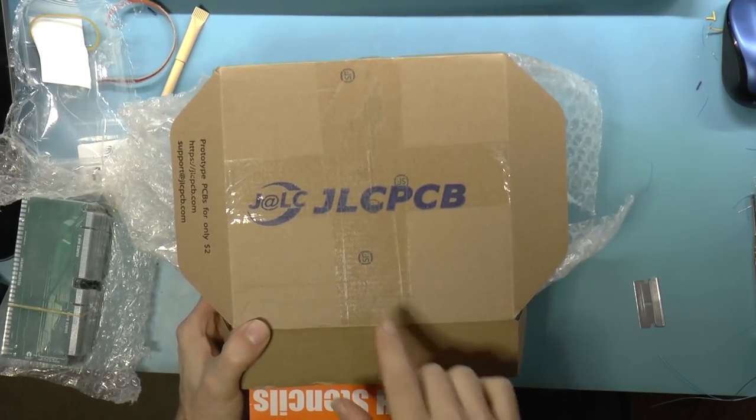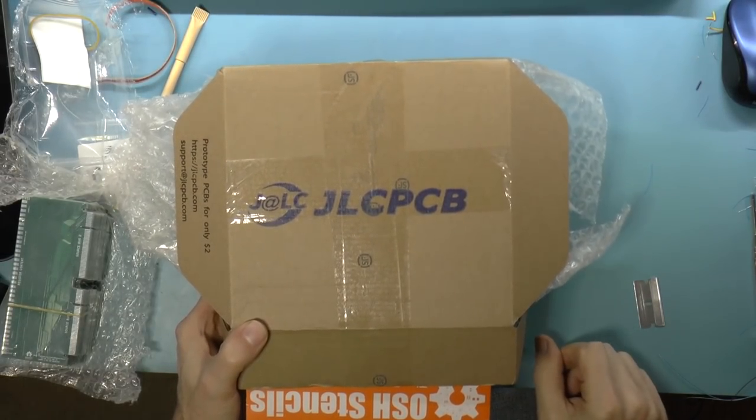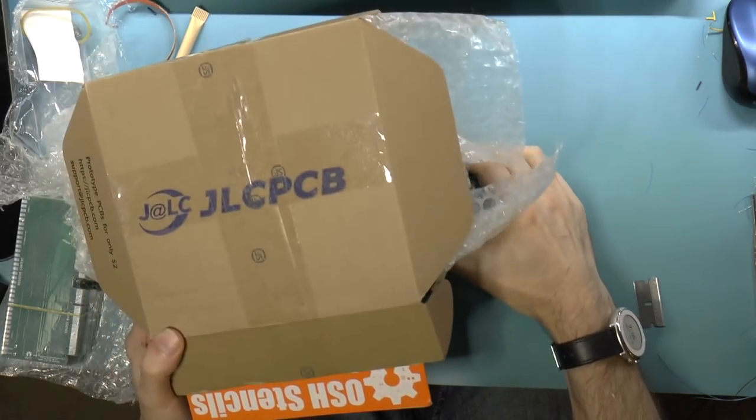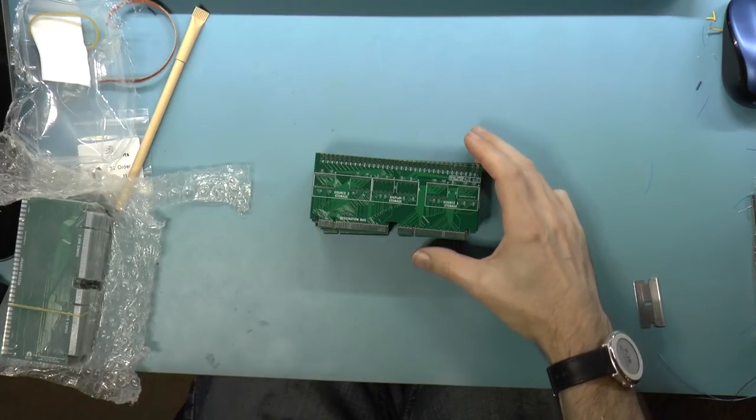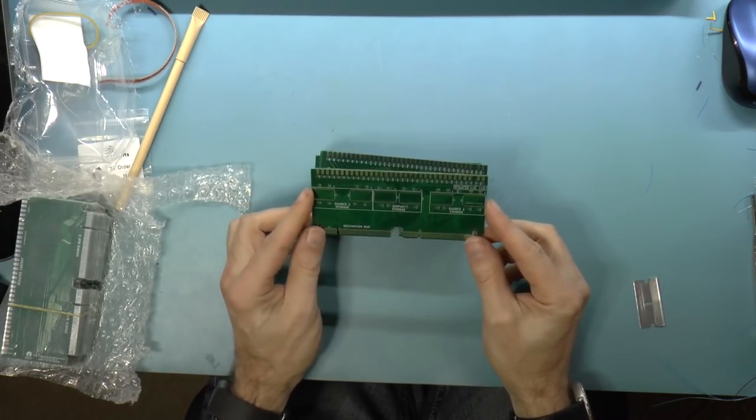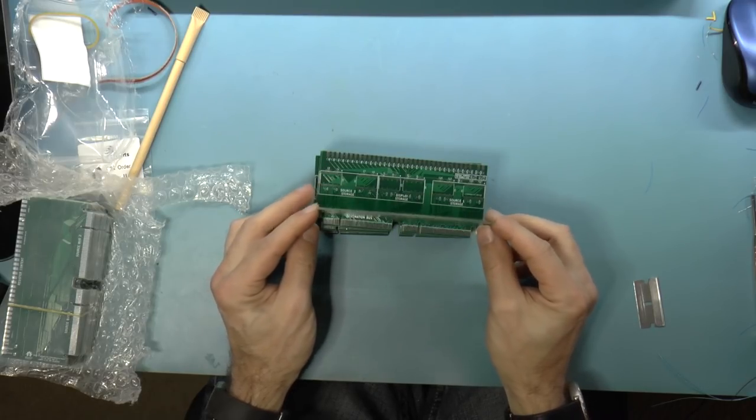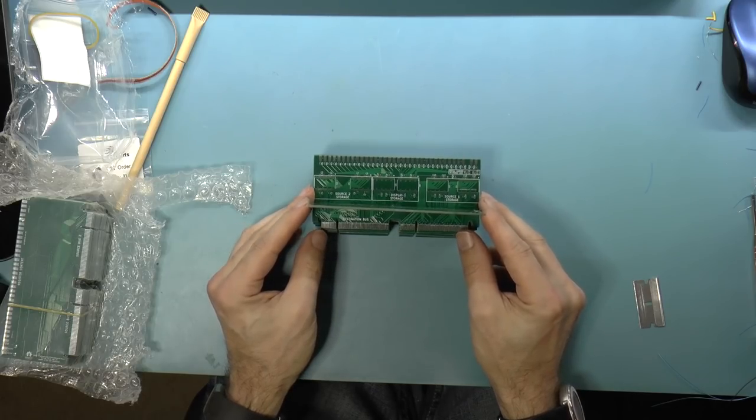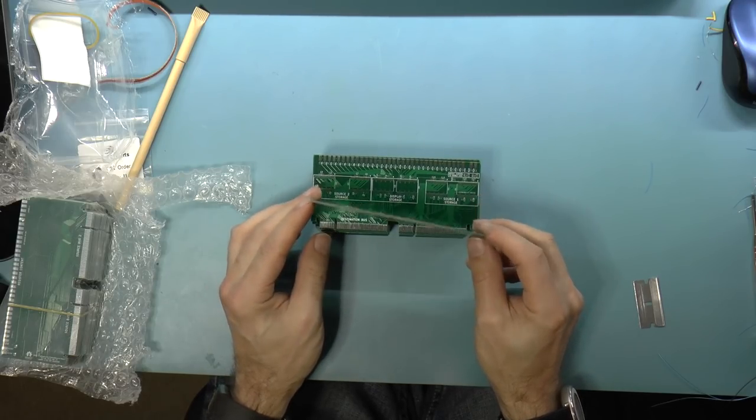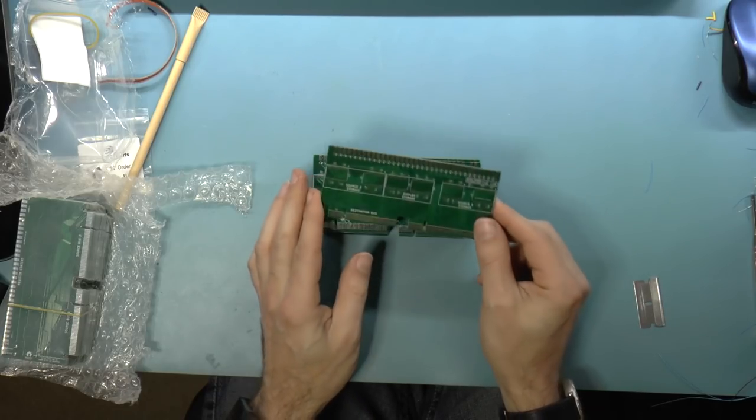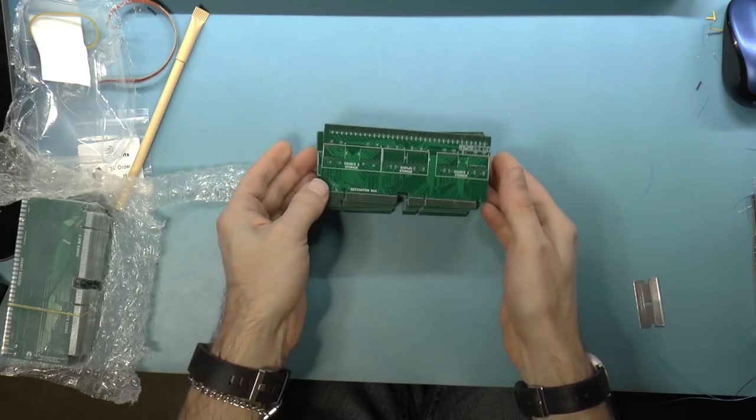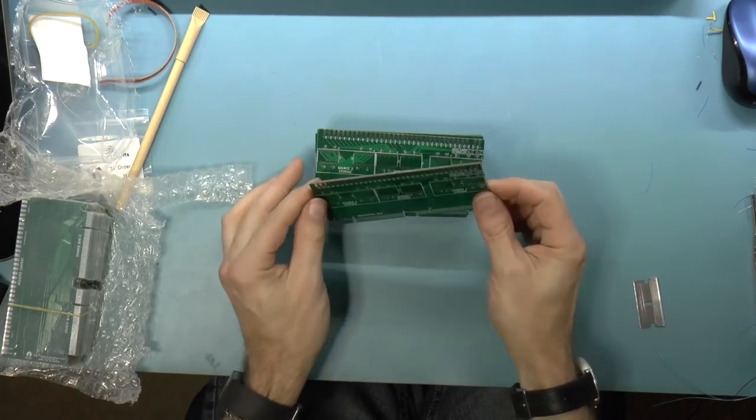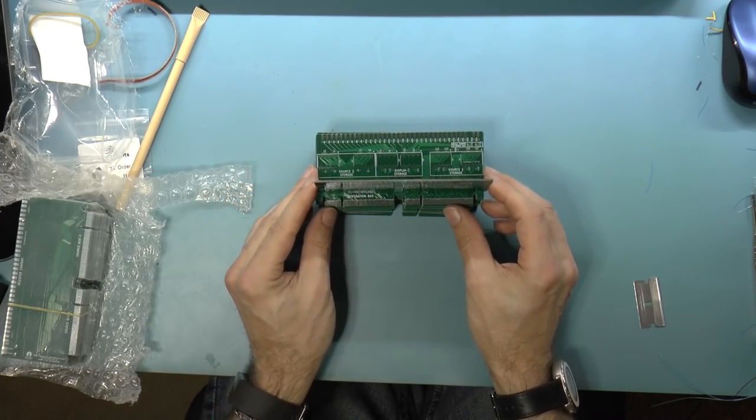Now maybe a little bit on why I chose JLCPCB instead of say Oshpark. I love Oshpark. They've got these great purple circuit boards. However, this is a 4-layer circuit board, and when you get a 4-layer circuit board from Oshpark, it's much much more expensive than their 2-layer boards. These were pretty cheap, even though I got 50 of them, and I want to say this was about $200 shipped. Very cheap, much cheaper compared to Oshpark.